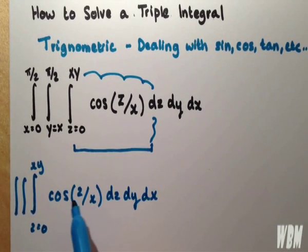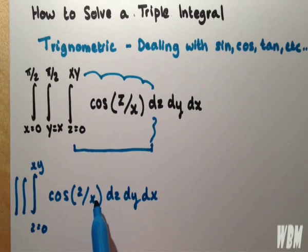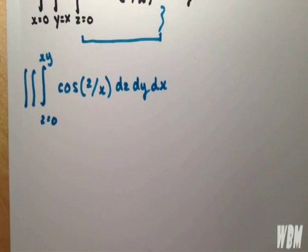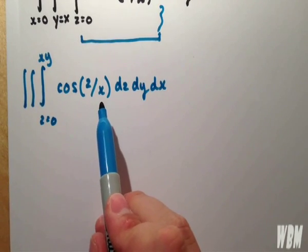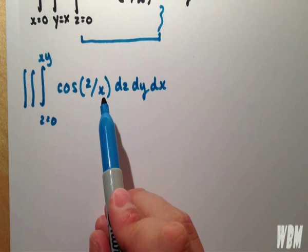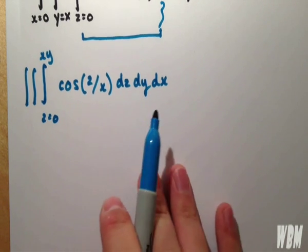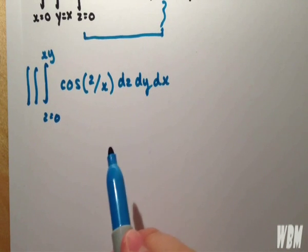Okay, now integrating cos of z over x with respect to z means that the x value becomes just a bit like a number, like a coefficient. So we don't need to worry about the x value, and I'll show you what happens.